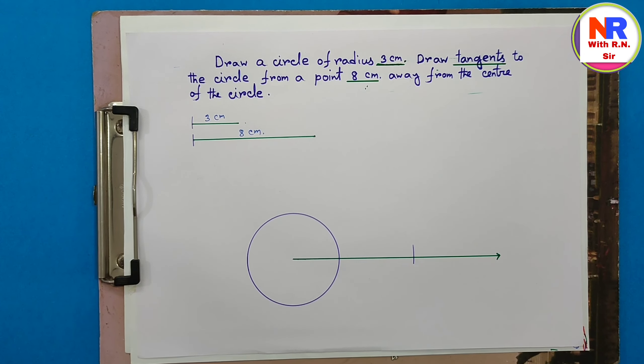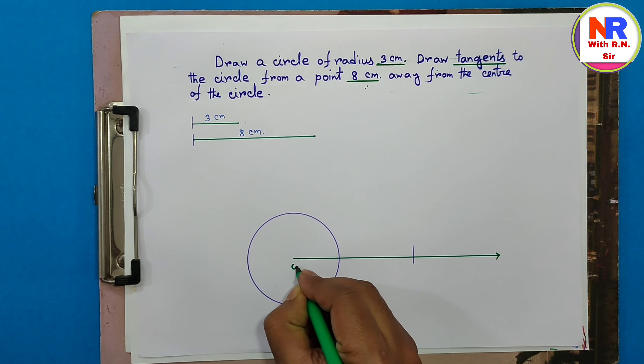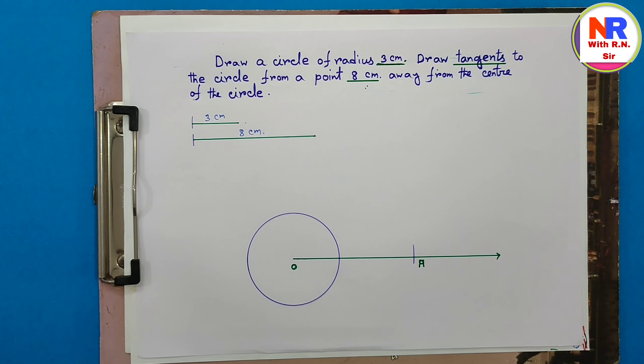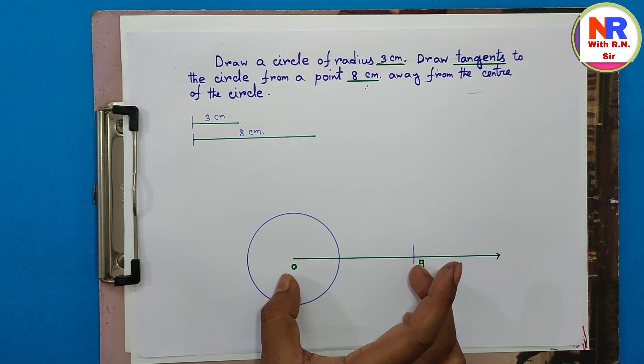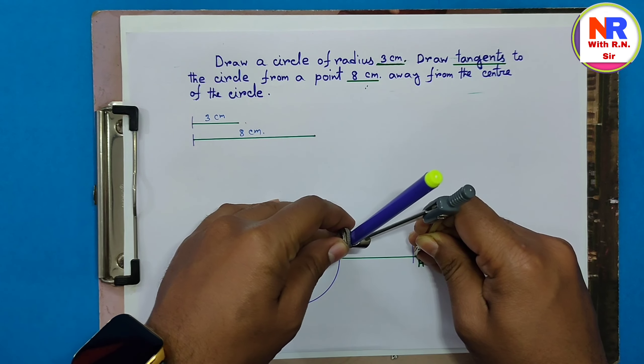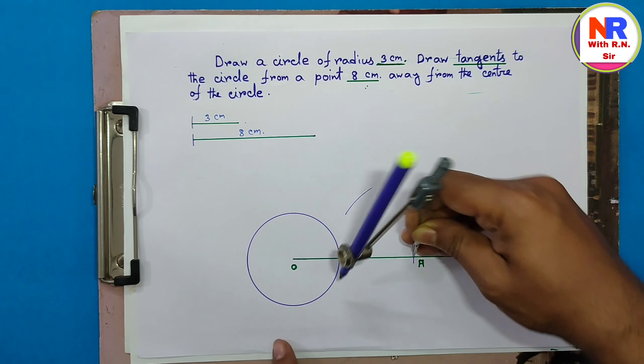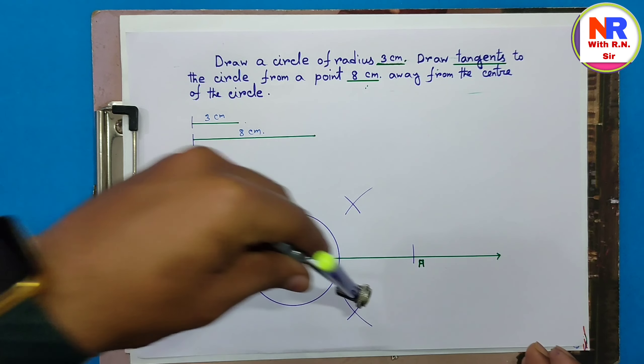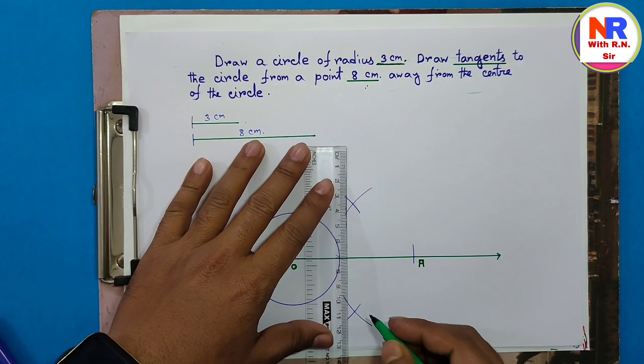After that we are getting, suppose this is center O and this is point A. After that, we will bisect this OA line segment. We will take more than half of this portion and join these two points.